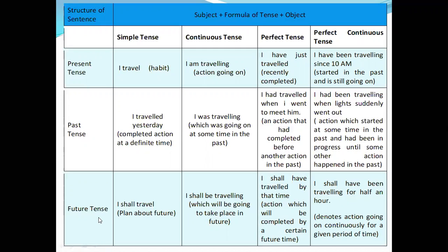Simple future tense: 'I shall travel' — it indicates a future plan. Future continuous tense: 'I shall be traveling' — the expectation that the action of traveling will take place and continue in the future. Future perfect tense: 'I shall have traveled by that time' — the action will be completed by a certain future time. Future perfect continuous tense: 'I shall have been traveling for half an hour' — the action going on continuously for a given period of time. I hope you understood, dear friends. Thank you for watching.